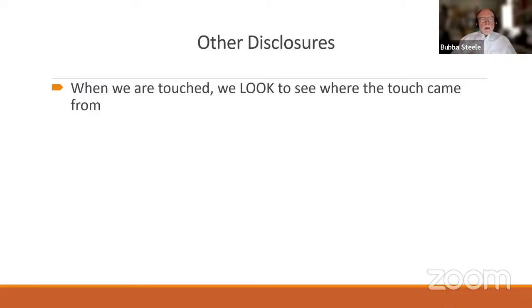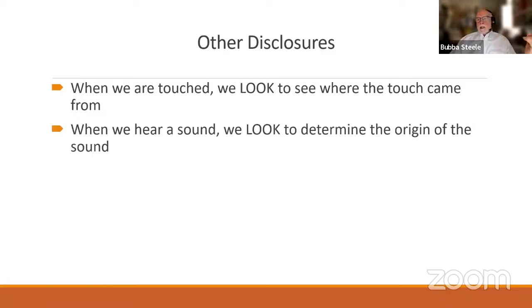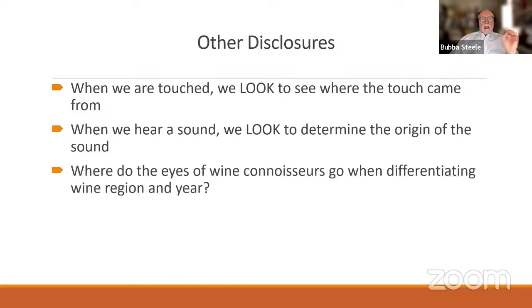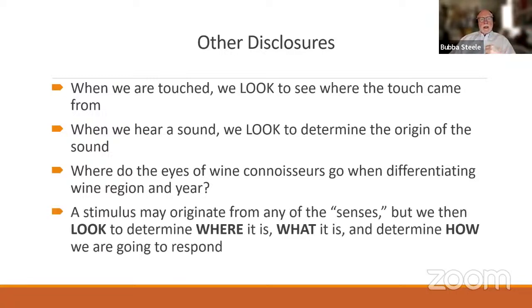When we're touched, we look to see where we're touched. When we hear a sound, we look to see the origin of the sound. Think of the difference between just hearing a sound and listening — in the same way, think about seeing versus looking. Where do the eyes of wine connoisseurs go when differentiating wine by region or year? A stimulus from anywhere may originate in any of the senses, but how we look to determine what it is and how we'll respond happens in a split second.